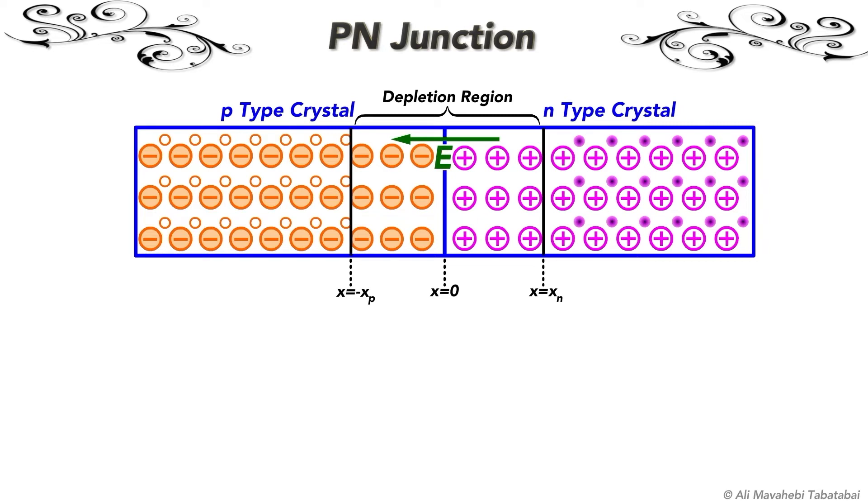Due to the recombination of electrons and holes around the junction, the region around the p-n junction is completely ionized. As a result, there will be no free electrons in the n-side nor any holes on the p-side. Since the region around the junction is depleted of electrons and holes, it is called the depletion region. It is also called the space charge region or the transition region.